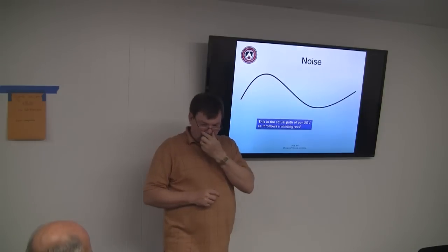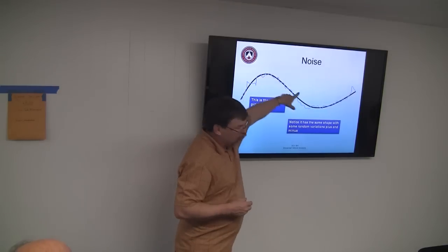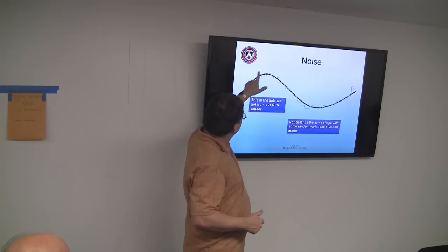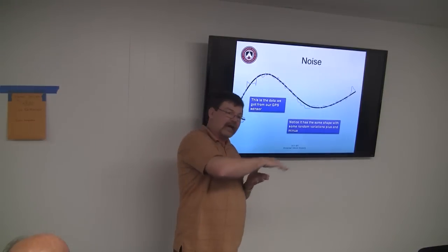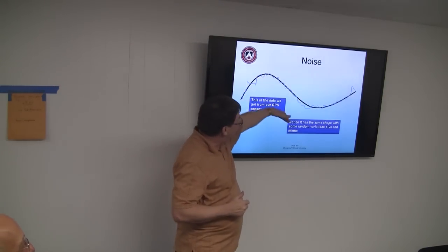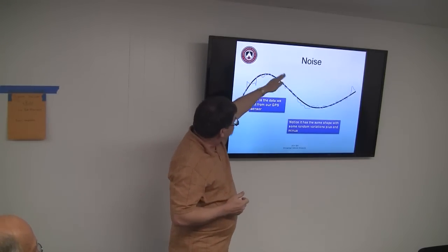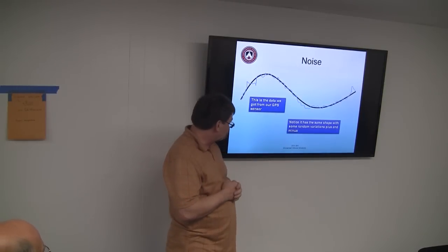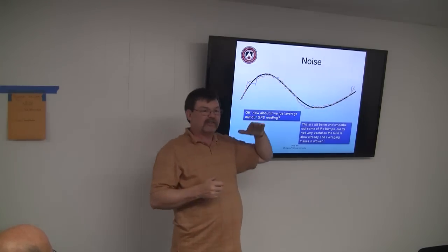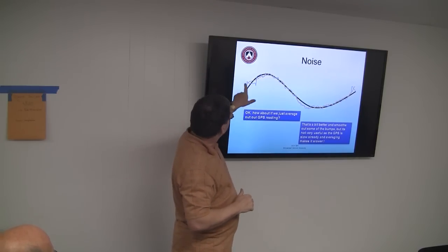Here's the path of our robot driving along the road. The black line is the path the robot actually took, and the blue line is the data we're getting from our actual sensor. What we have is the basic shape of the path with a bunch of noise thrown in — roughly the same shape, with some plus-or-minus random variations in position.